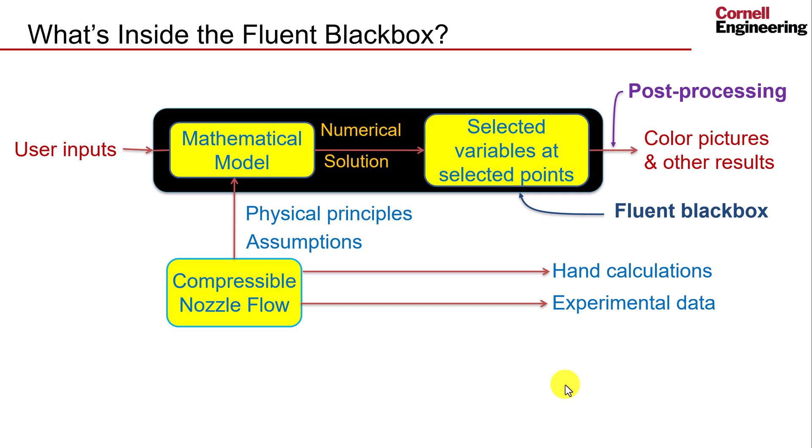We will interpret the solution process using this black box framework. We start with our physical problem, which is flow in a nozzle. From this, we can use physical principles and assumptions to create a mathematical model inside the Fluent black box. It figures out this model from our user inputs. Let's take a look at the mathematical model.